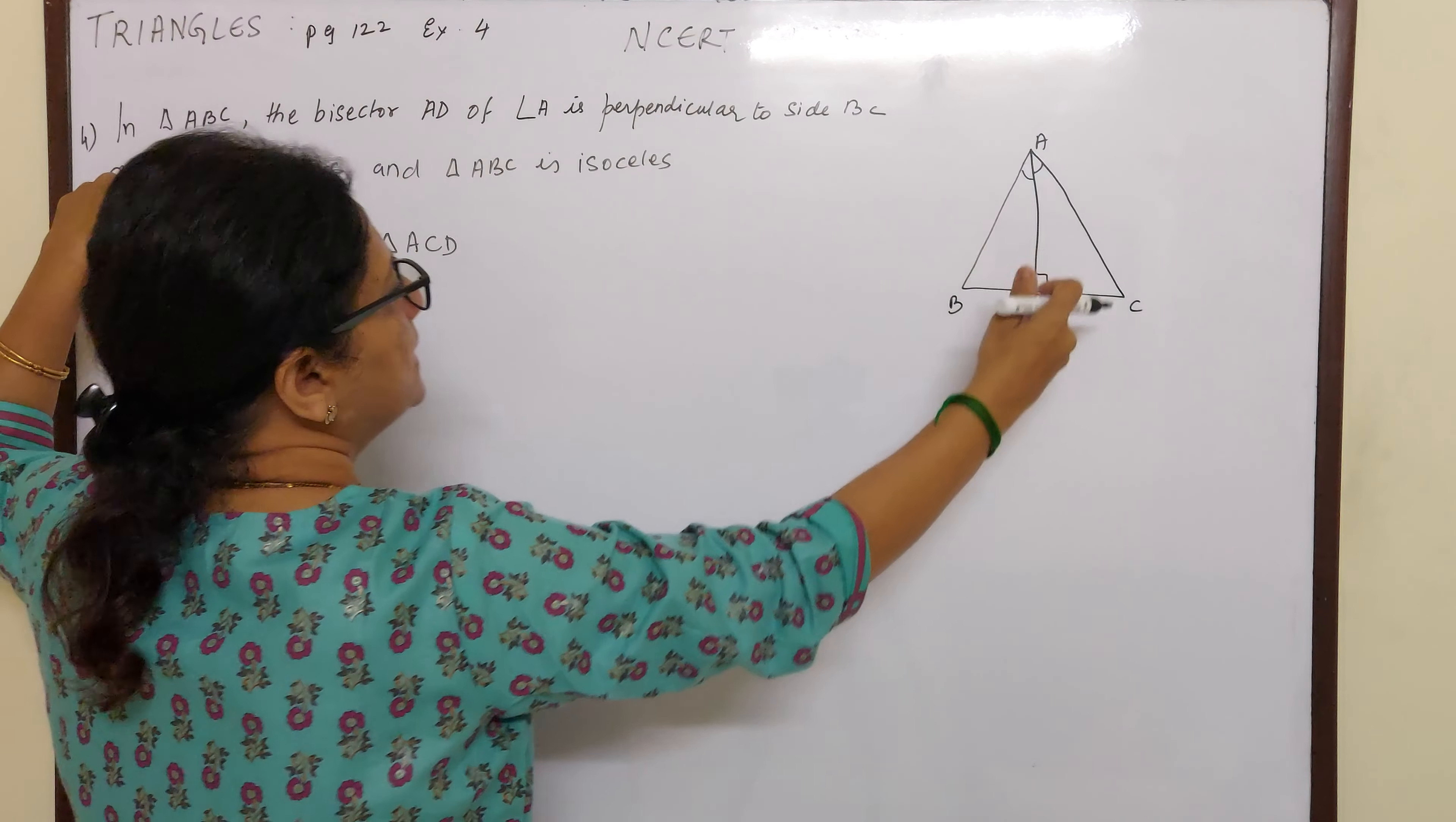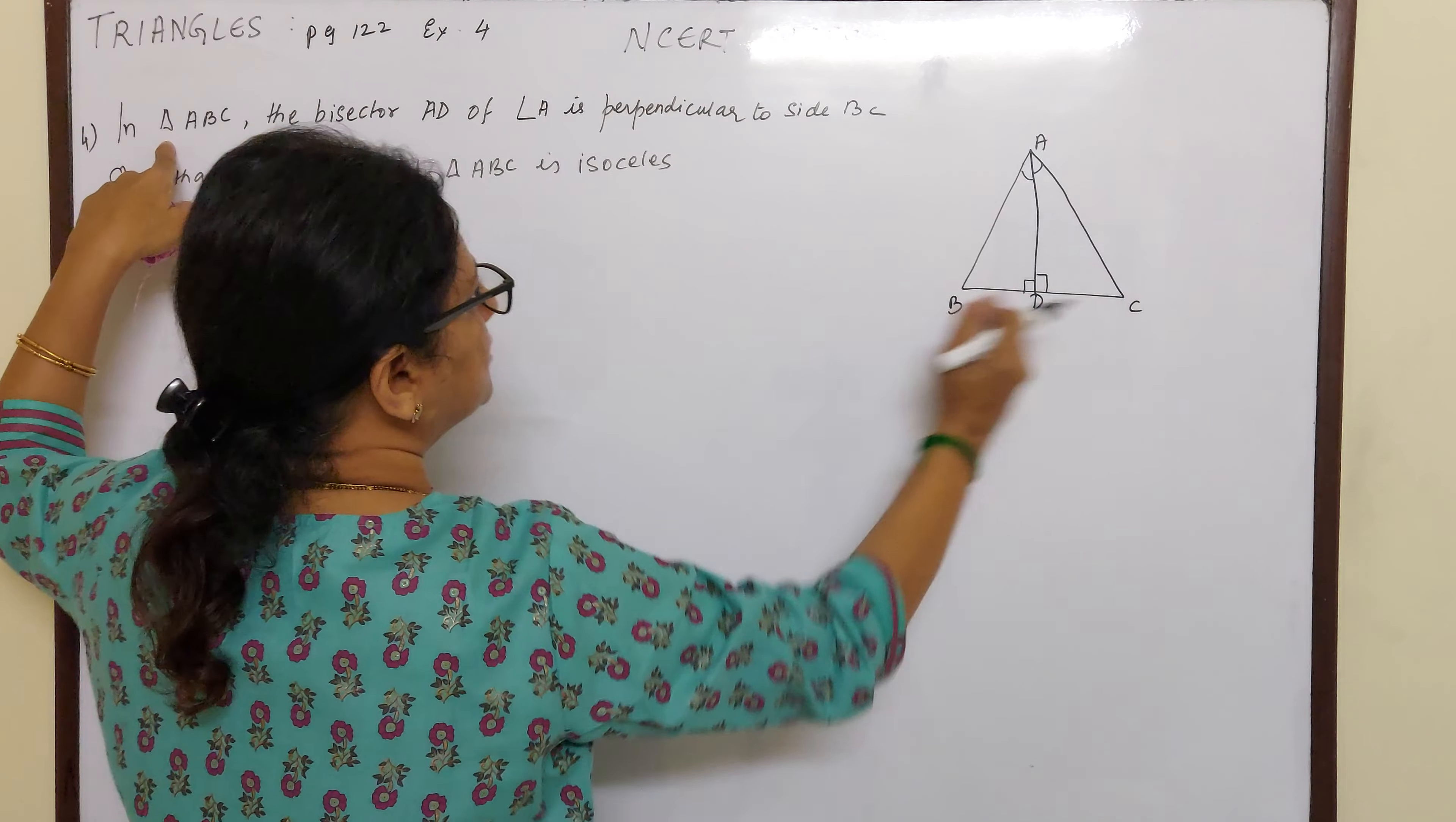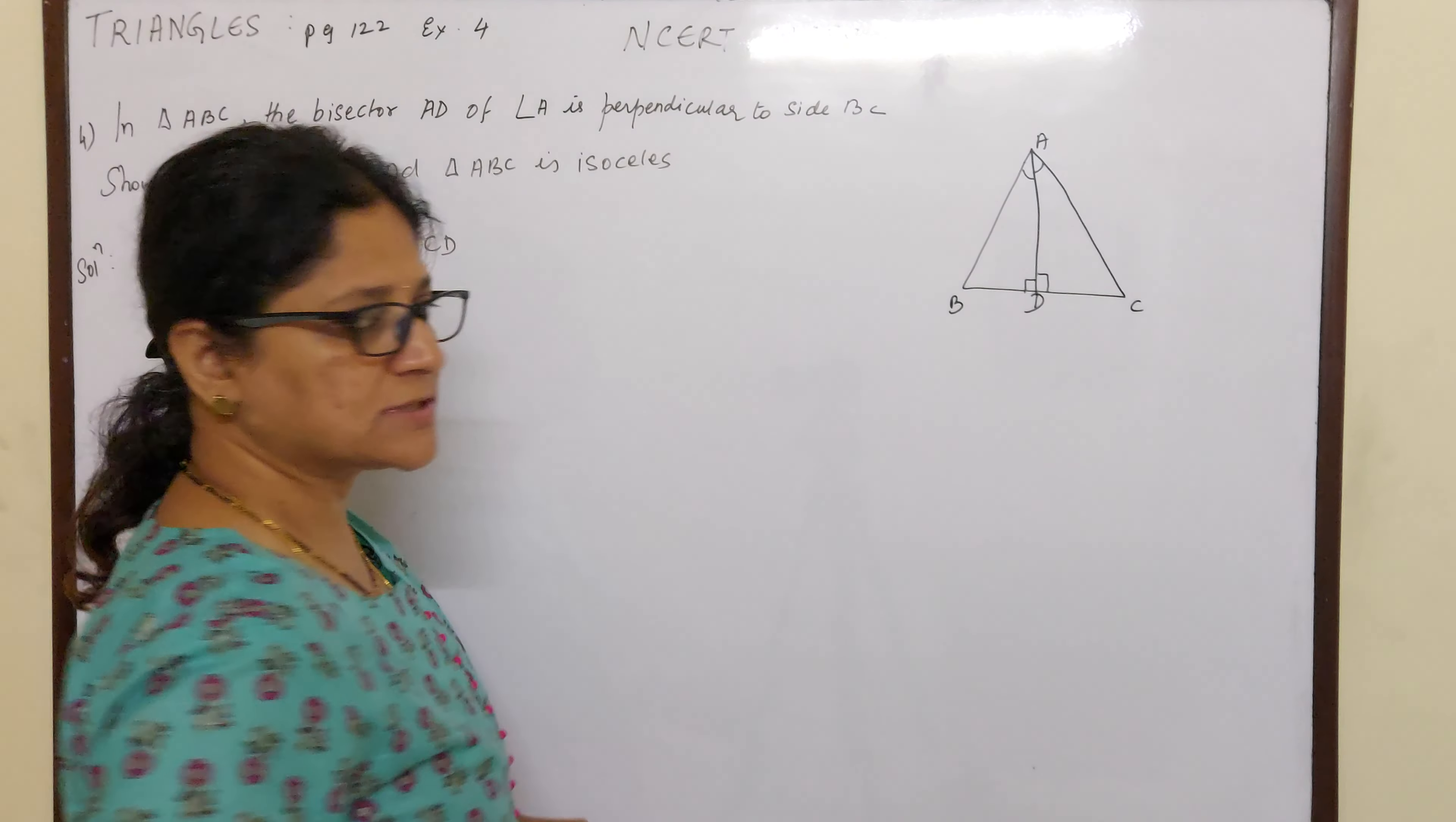It says in triangle ABC, the bisector AD of angle A is perpendicular to side BC. Show that AB is equal to AC and triangle ABC is isosceles.